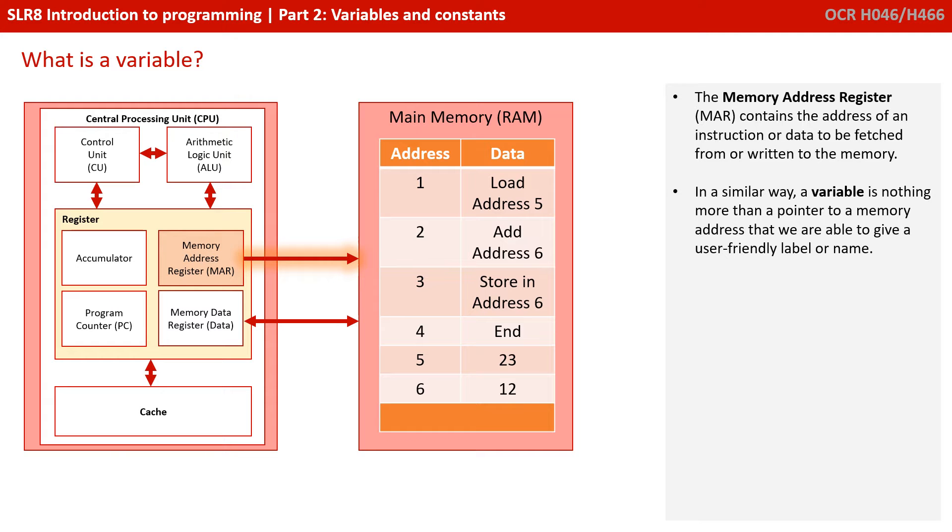So before we dive into this video, what actually is a variable? Well, if you go right back to what we covered at the start of the course, we looked at one of the registers in the CPU, the memory address register. And this contains the address of an instruction or data to be fetched or written to the memory. And in a very similar way, a variable is nothing more than a pointer to a memory address, which you're then able to give a user-friendly label or name.